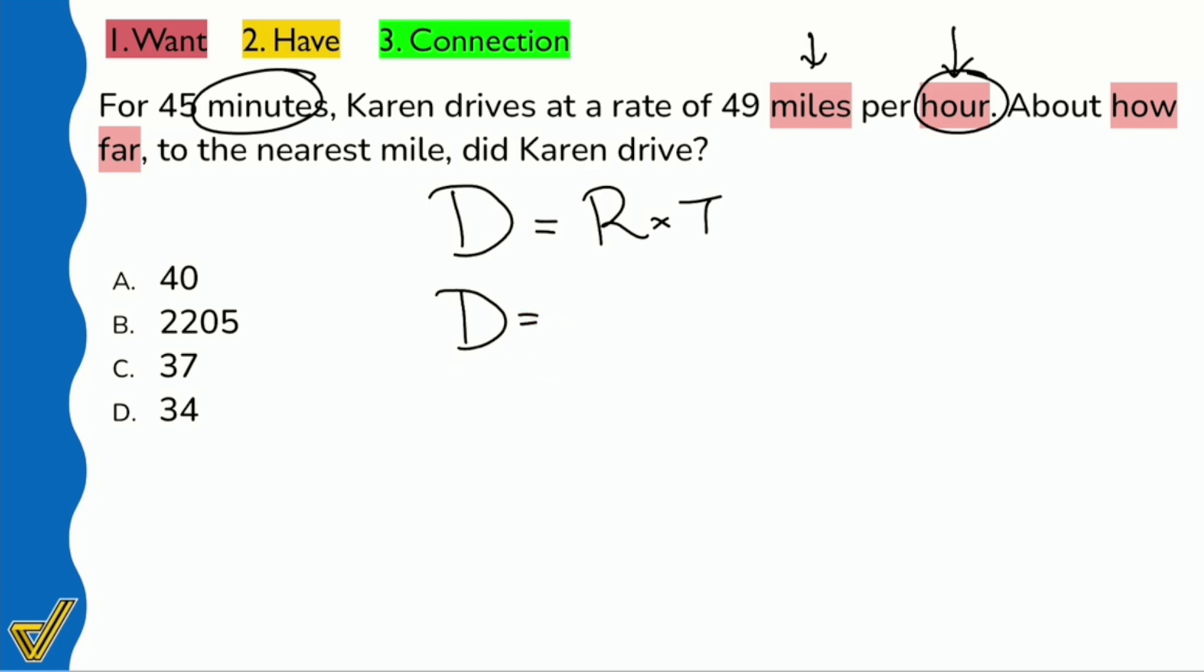So here, distance equals our rate being 49 miles per hour. The time is not going to be 45. We need to convert. Let's go ahead and zoom in over here. We need to convert this 45 minutes into hours. That's what we need to do. And to do that, we'll divide by 60. Remember, every group of 60 minutes is one hour, so we'll divide by 60 to see how many hours we can make.